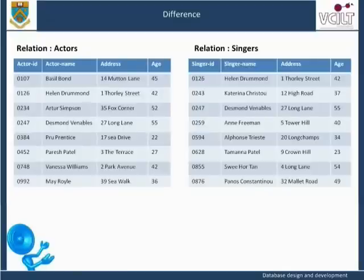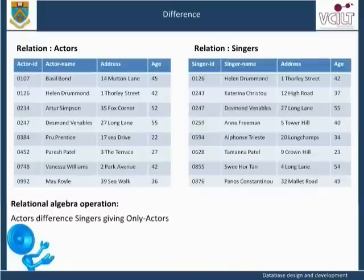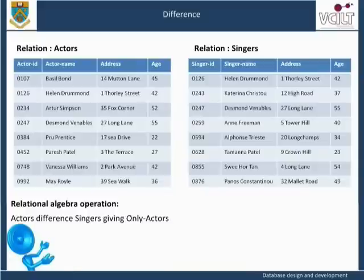If we want to find out which actors are not also singers, the following relational algebra operation will achieve this: Actors difference Singers giving only actors. The result of this operation is to remove from the relation actors those tuples that also occur in the relation singers. In effect, we are removing the tuples in the intersection of actors and singers in order to create a new relation that contains only actors.